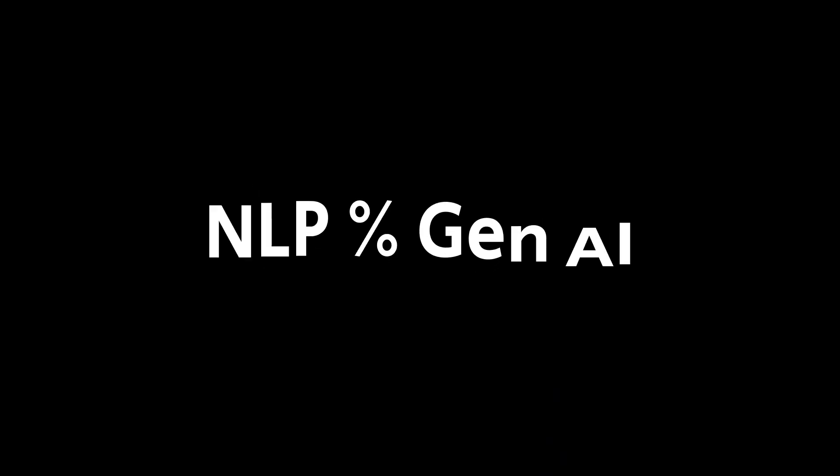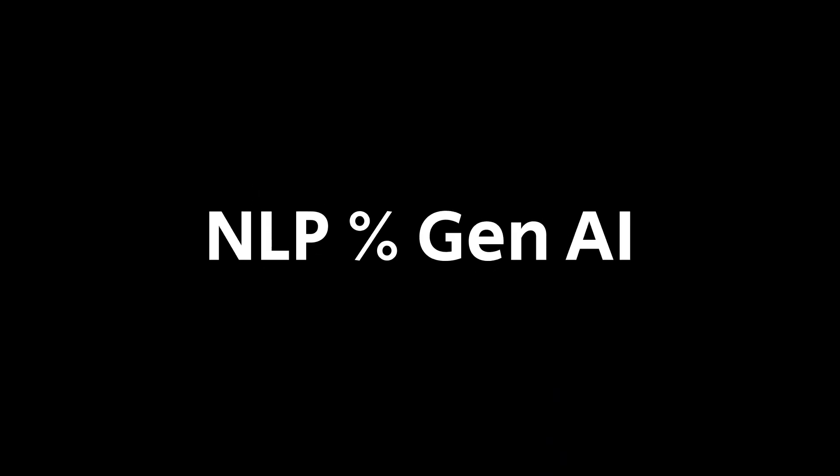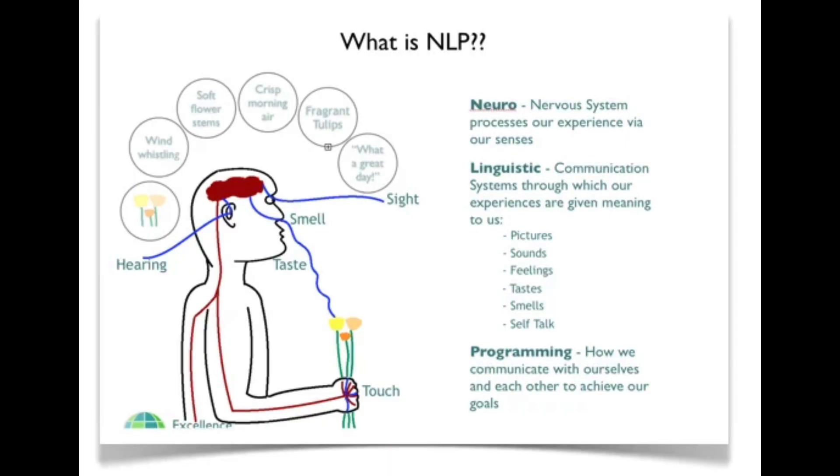In Month 3, that's the core thing: NLP and Generative AI. NLP is Natural Language Processing. If you want to use ChatGPT anywhere, that capability comes from NLP.